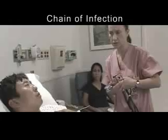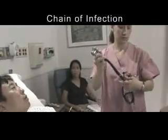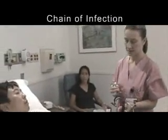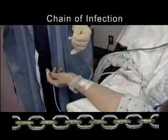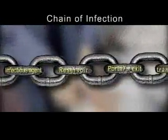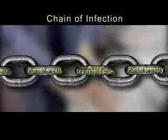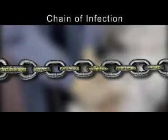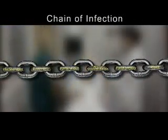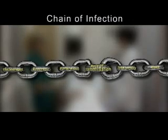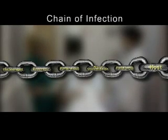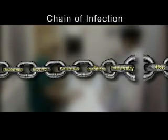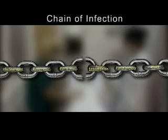The chain of infection provides a visual model for understanding the process of disease transmission. It is represented by a circle of links, with each link representing a component in the chain. Each link must be present and in sequential order for an infection to occur. This means that the removal of any link will prevent the transmission of the infection.